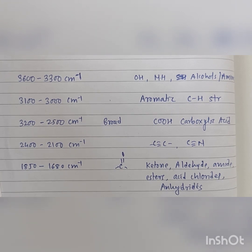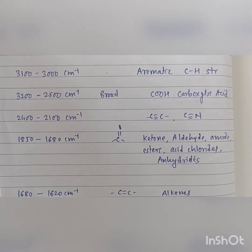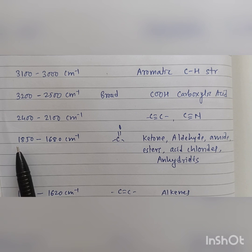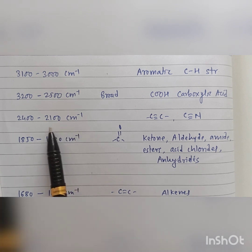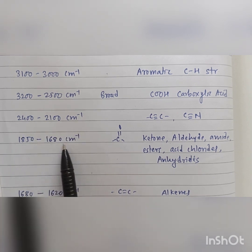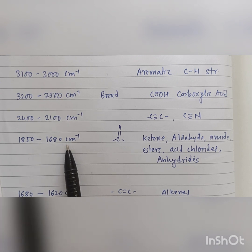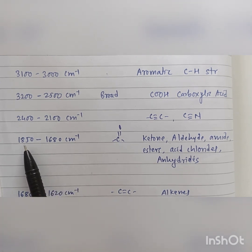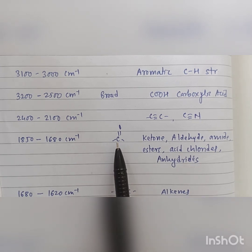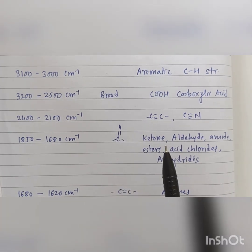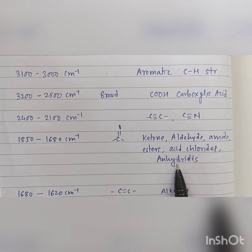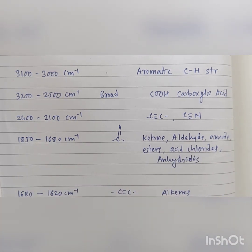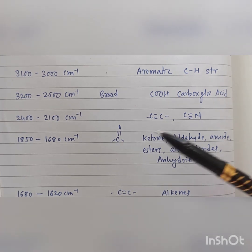The most important region of IR frequency is the carbonyl absorption, that is 1850 to 1680 centimeter inverse. If there is a strong and sharp peak, then the carbonyl group can be identified. A large number of compounds like ketones, aldehydes, amides, esters, acid chlorides, and anhydrides fall in the region of 1850 to 1680 centimeter inverse, depending on the strength of the C=O bond.